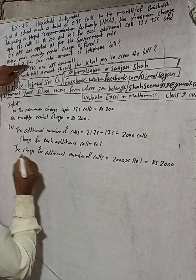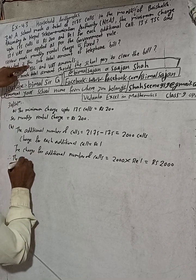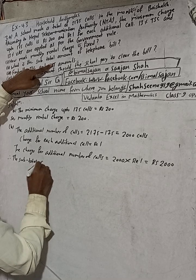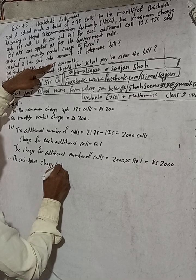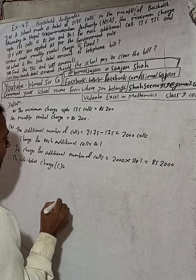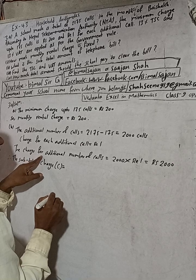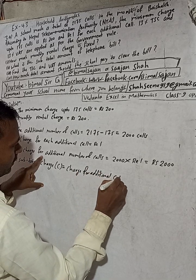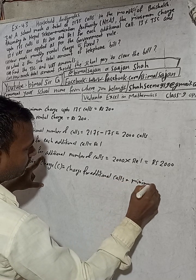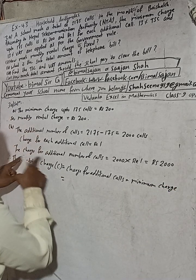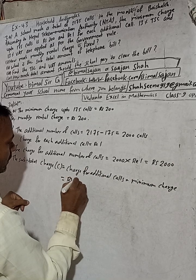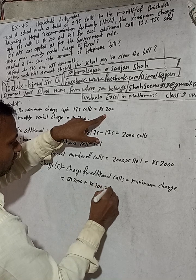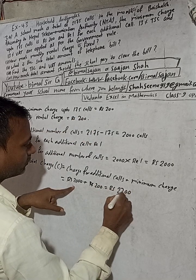Therefore the sub-total charge, indicated by C, is equal to the charge for additional calls plus the minimum charge. That is Rs. 2000 plus Rs. 200, which equals Rs. 2200. So the sub-total charge for question number two is Rs. 2200.